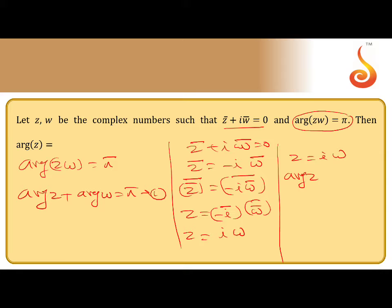Now apply argument of both sides. Argument of z equals argument of iw. So further, argument of z equals argument of i plus argument of w. Therefore argument of z equals argument of i plus argument of w. Shift this to the other side.